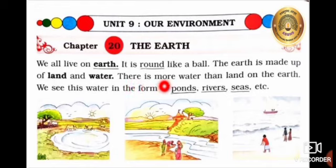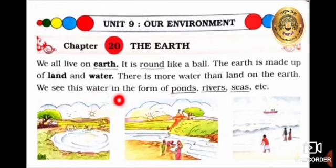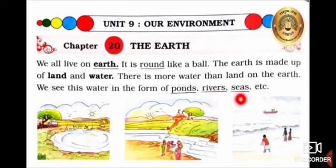The Earth is made up of land and water. There is more water than land on the Earth. We see this water in the form of ponds — P-O-N-D-S, rivers — R-I-V-E-R-S, seas — S-E-A-S, etc.